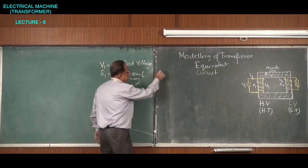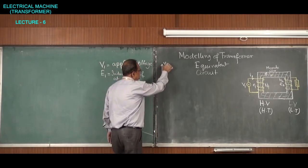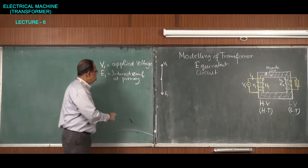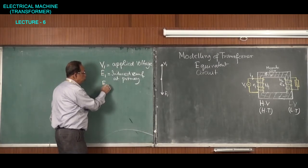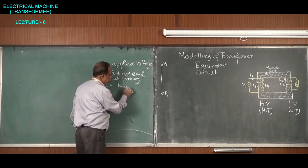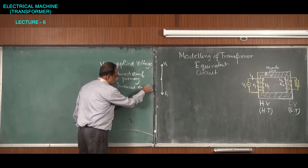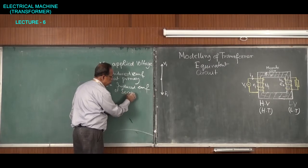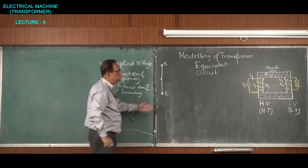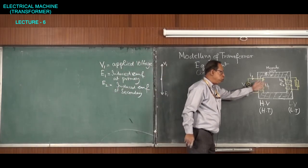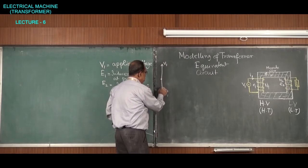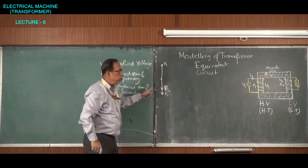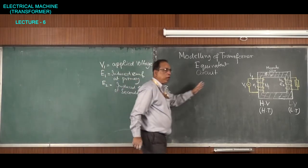If we represent the primary with a phasor diagram, V1 is there and E1 will be opposing it of almost the same value. Similarly, E2 is the induced EMF at the secondary. Since the same flux produces both E1 and E2, they will be of the same phase. E2 will be in the same phase as E1.